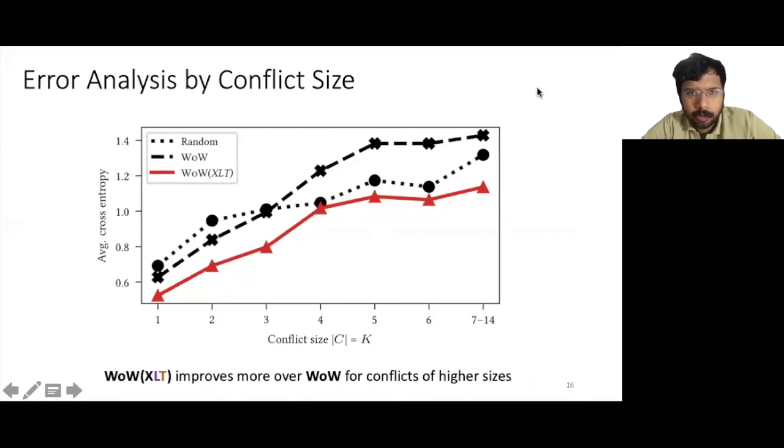We now see the performance broken down by the conflict size. We see that our model outperforms both the random baseline as well as the baseline BAU model. The improvement over the BAU model increases for larger conflict sizes. The BAU model actually performs worse than random for conflicts of size 4 and above. This may be partly explained by the fact that the dataset is dominated by conflicts of smaller sizes, as seen from the histogram here.